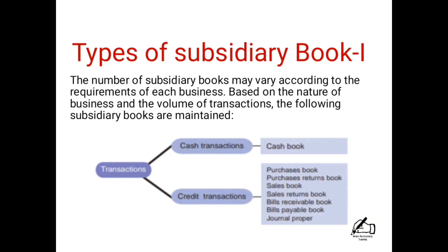The subsidiary book has two types: one is cash transactions, recorded in the cash book, and the other is credit transactions.